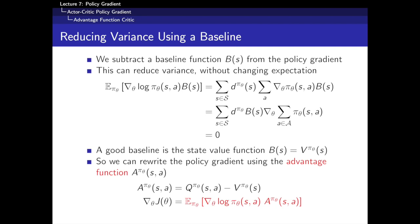There's a particularly nice choice for the baseline: the state value function V. What we're going to do is start with our Q values — our action value function — and subtract off the state value function. What we're left with is called the advantage function. This tells us how much better than usual it is to take action A: the Q value of action A compared to how good it is to be in that state in general. We call this D — the advantage function. We can now rewrite our policy gradient theorem as the expectation of the score multiplied by the advantage function.